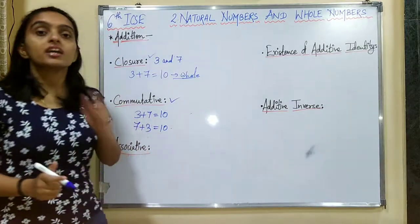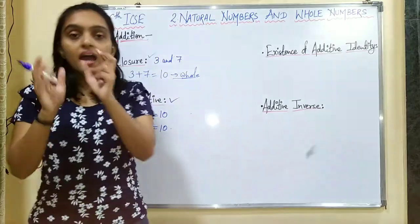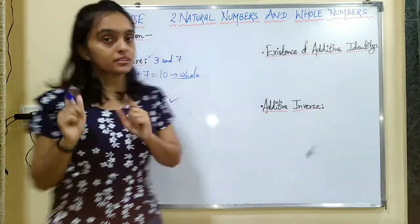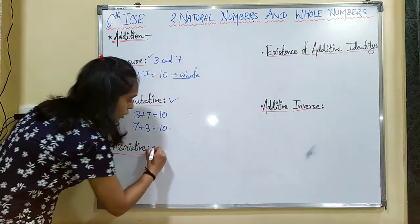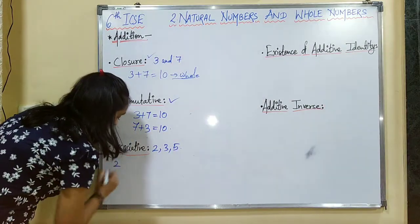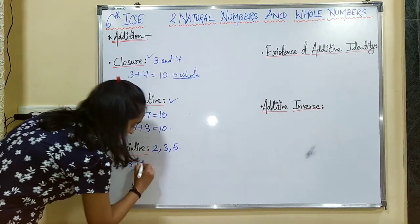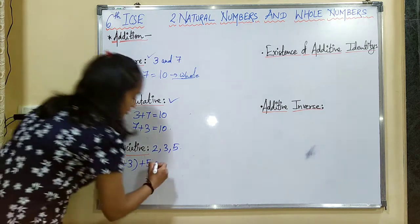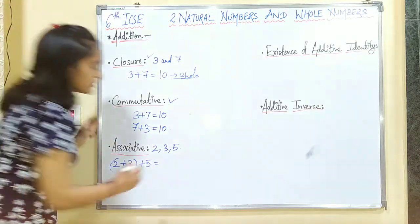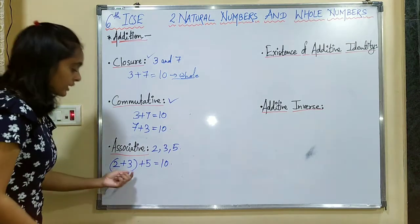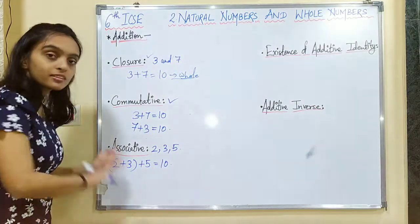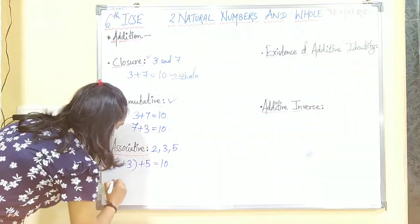Now, associative property. If there are three whole numbers and we add them, then if we change the order of adding them, the answer remains the same. For example, if I have 2, 3 and 5 as the whole numbers — if 2 plus 3 are added first and then we add 5 to it, then 2 plus 3 is 5 and 5 plus 5 is 10. Also, if I add 3 to 5 first and then add 2, the order of addition is changed.